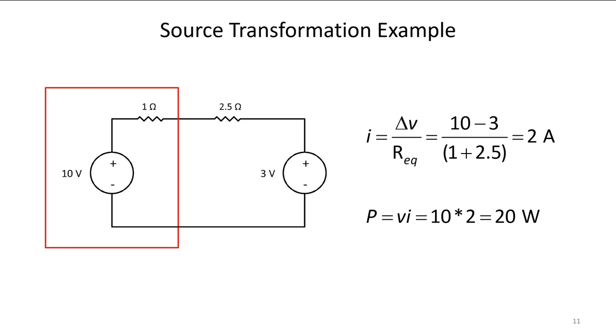That gives me 7 volts and then that 7 is divided by 3 and a half ohms to give me 2 amps. So the current flow through the 10 volt source is 2 amps.